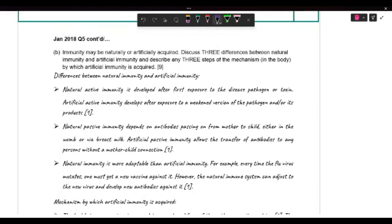Then we have natural passive immunity. That depends on you passing on antibodies from mother to child, either in the womb or via breast milk. Artificial is when you're transferring antibodies to any persons without any mother-child connection.